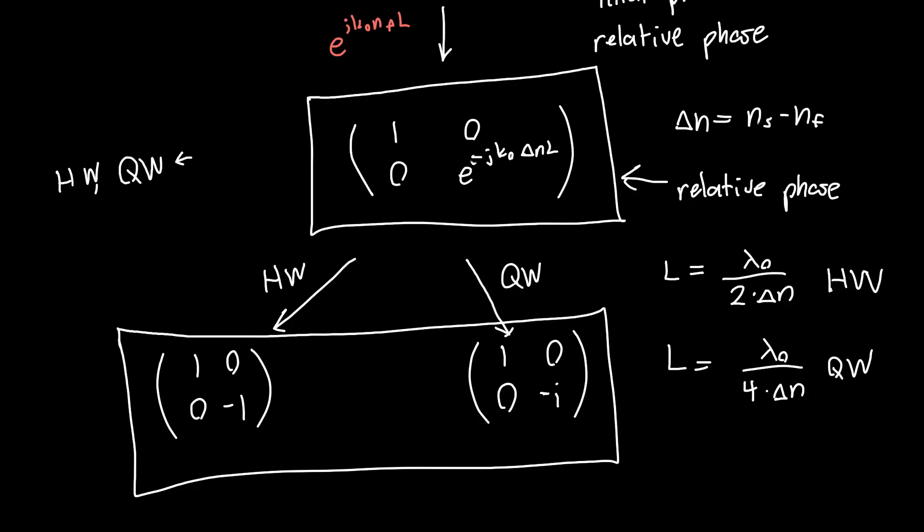Now, if you scour the internet, you might notice that some people write quarter waveplates like this, 1, 0, 0, i. And this just has to do with the wave convention that they're using. So they're instead using e to the j kz minus omega t. But as long as you stick with the same convention when you're doing all the math, you'll get identical answers. You might also see that there's this extra phase factor out front, e to the i pi over 4, or I guess e to the minus i pi over 4 in the case of this matrix. This was just the thing that we discarded, or rather, this is part of what we discarded, because we're only interested in the relative phase between our two waves.